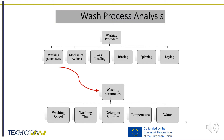Together with washing parameters, mechanical actions during the washing such as abrasion, bending, shearing, etc., wash loading meaning the amount of textile products in the washing machine, and finally rinsing, spinning and drying phases make part of the washing procedure.